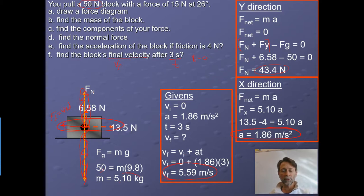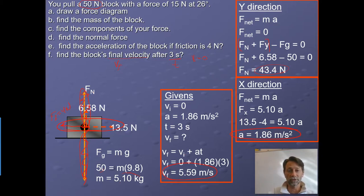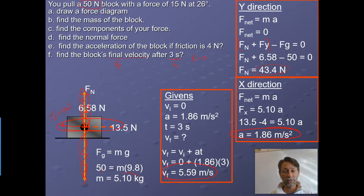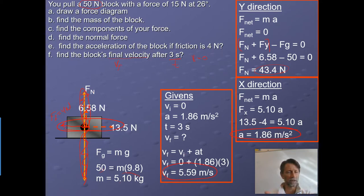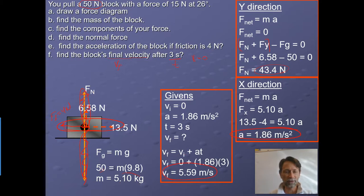To summarize Newton's second law: we deal with F equals ma in the Y direction, which usually cancels out — all forces up equal all forces down. We also deal with F equals ma in the side-to-side direction, which doesn't cancel out unless you're at constant velocity. When they don't cancel, the difference between those forces is what causes the object to accelerate.